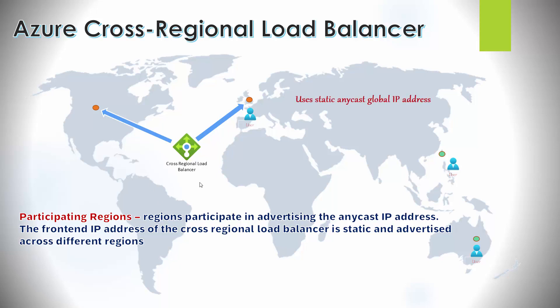The load balancer doesn't actually exist in the middle of the ocean. It uses something called anycast IP, meaning the IP address is advertised from the participating regions. All four regions - one in the US, one in the UK, one in Japan, and one in Australia - advertise the same anycast IP address. Depending on where you are in the world, you will be routed to the nearest region, and traffic is then routed across the Microsoft Azure backbone network.